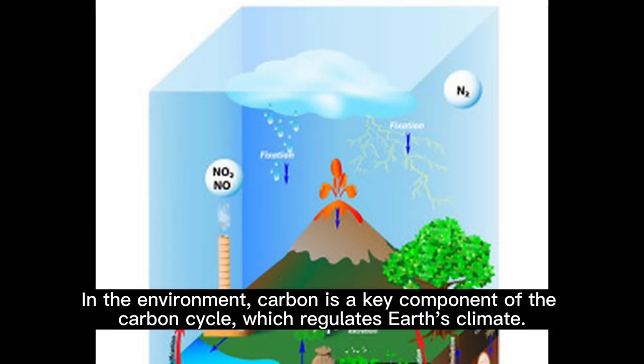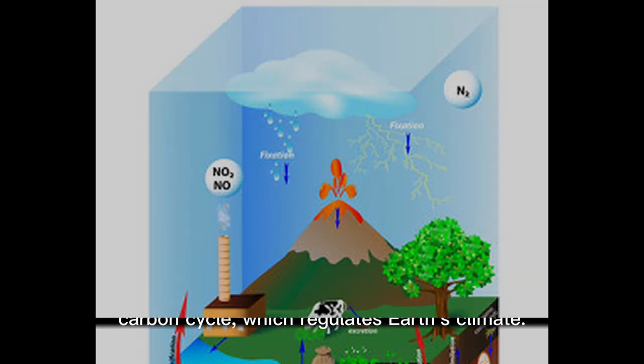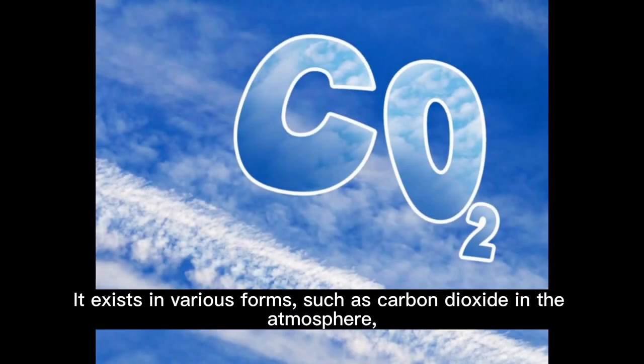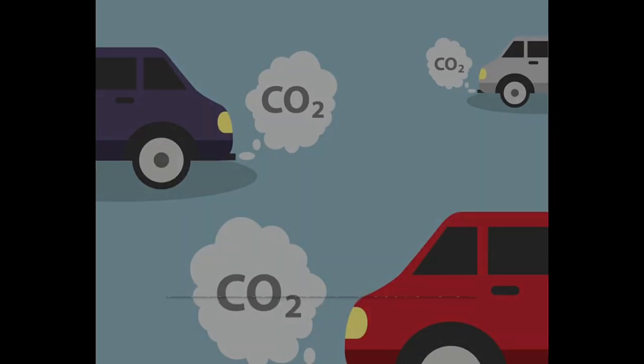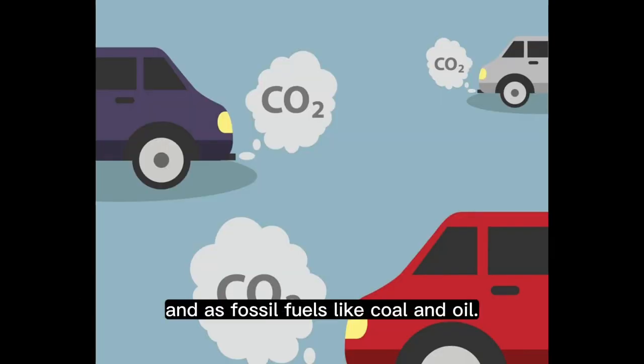In the environment, carbon is a key component of the carbon cycle, which regulates Earth's climate. It exists in various forms, such as carbon dioxide in the atmosphere, and as fossil fuels like coal and oil.